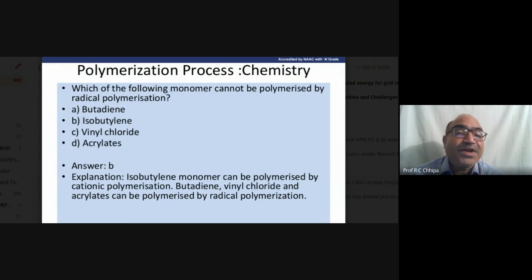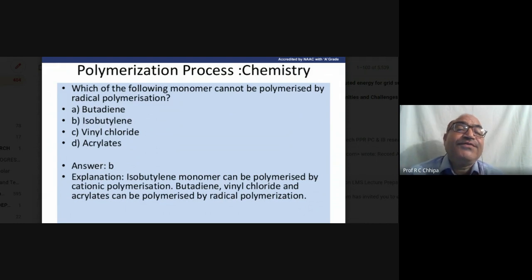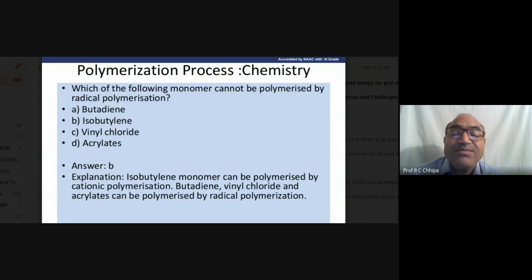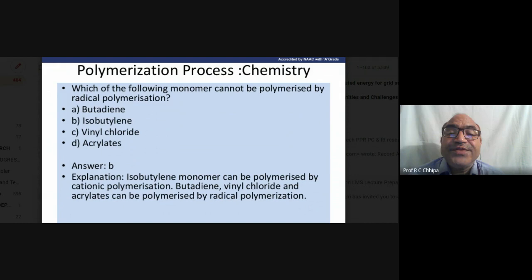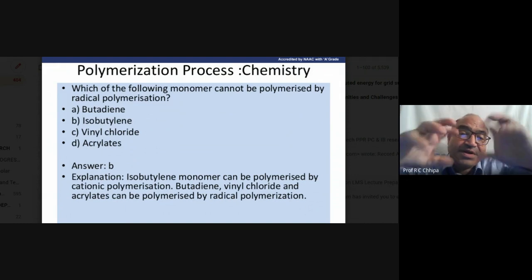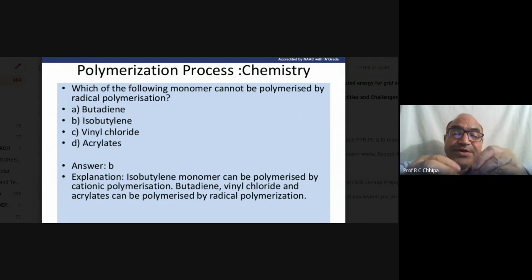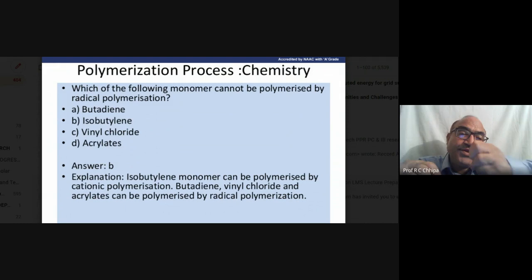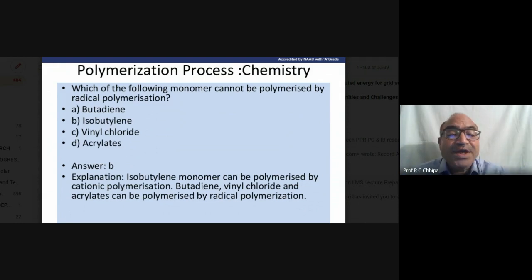The question: which monomer cannot be polymerized by radical polymerization? The answer involves isobutylene. Isobutylene monomer can be polymerized by cationic polymerization — cationic meaning electrophilic — because a cation (which I discussed earlier via heterolytic fission, where one atom takes both electrons) is an electrophile.